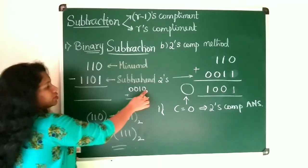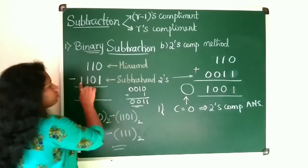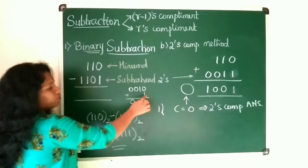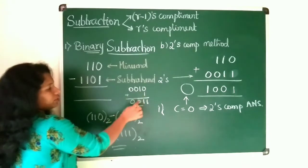So 1 is turned to 0, 0 is turned to 1, 1 turns to 0, 0. Add 1 to it. 0 plus 1 is 1, 1, 0, 0.